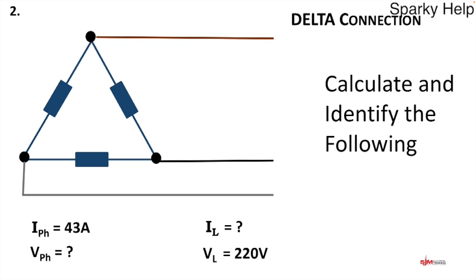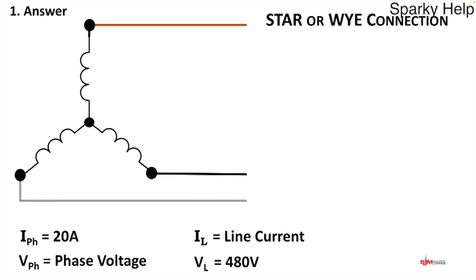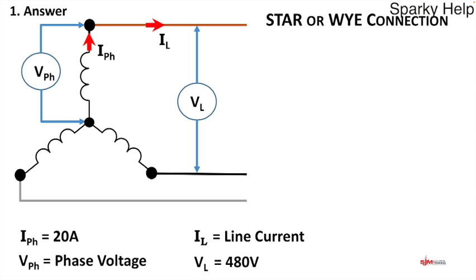Let's go back and answer question one — the star and Y connection. What do we need to identify? There's i-phase in the phase winding, il around the corner is in the line, and vl is the voltage between the lines — I've shown l1 to l2 but you could equally pick up the other two. V-phase is from the end of a winding to the star point. You don't need a neutral, but if you had one it could be line to neutral — that would also be v-phase.